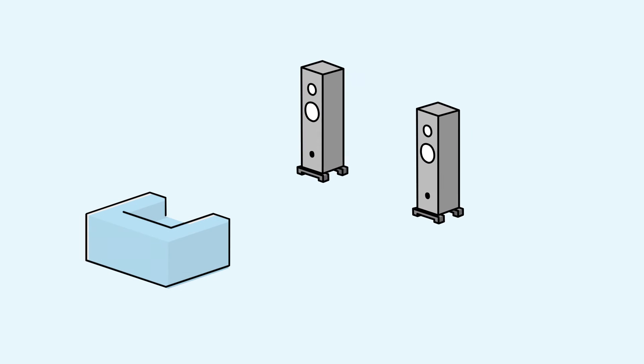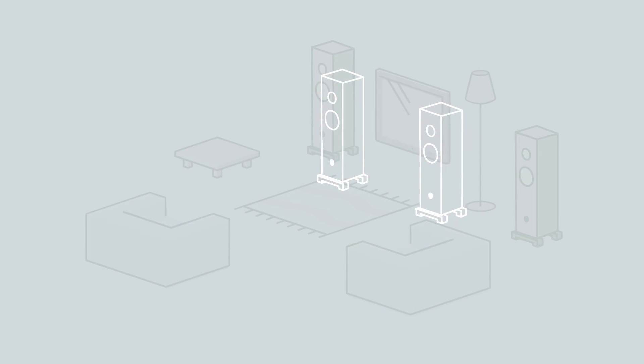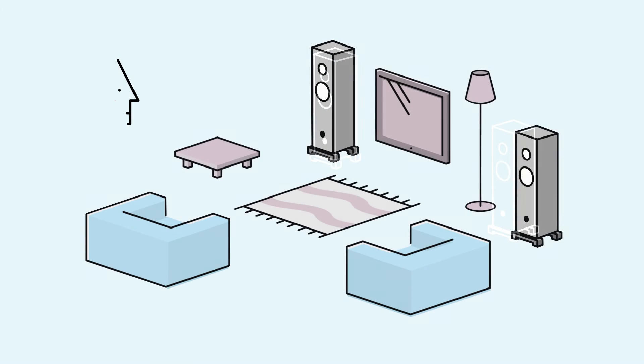Space optimization enables your Linn DS to emulate the sound of the ideal speaker position from your preferred practical location. Now, you can put your speakers wherever you want and still enjoy great performance.